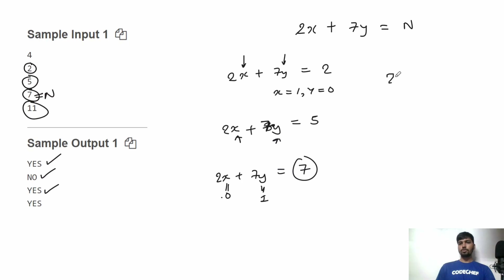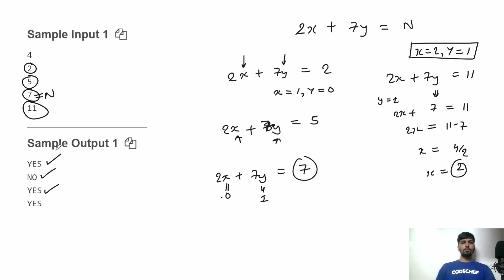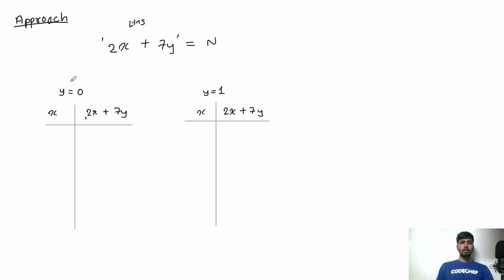For the fourth test case, the equation is 2x + 7y = 11. We can put y = 1, which gives 2x + 7 = 11, so 2x = 4, meaning x = 2. For x = 2 and y = 1 the equation is satisfied, so the answer for the fourth test case is 'Yes'.